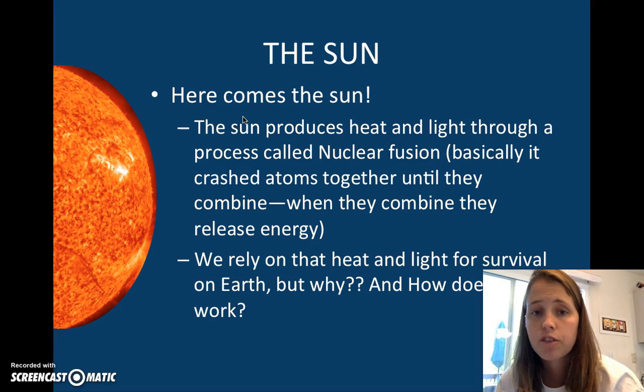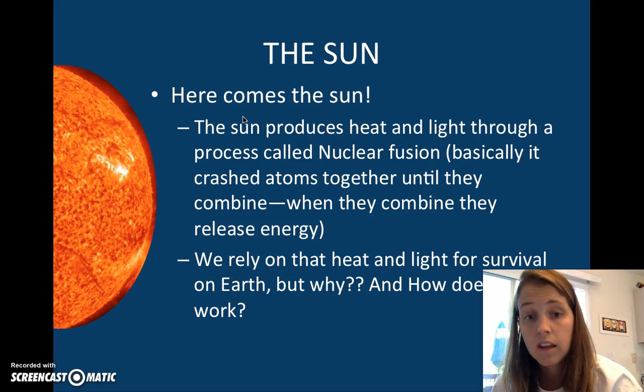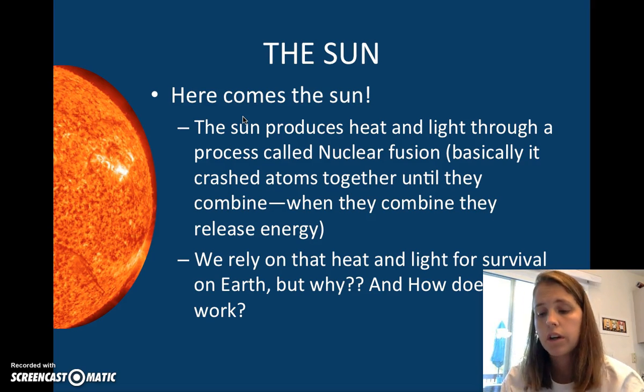The Sun produces all heat and light through a process called nuclear fusion. Basically, it crashes atoms together until they combine, and when they combine they release a ton of energy. This energy is in wavelengths. So we rely on heat and light for survival on Earth, but why? How does it work?